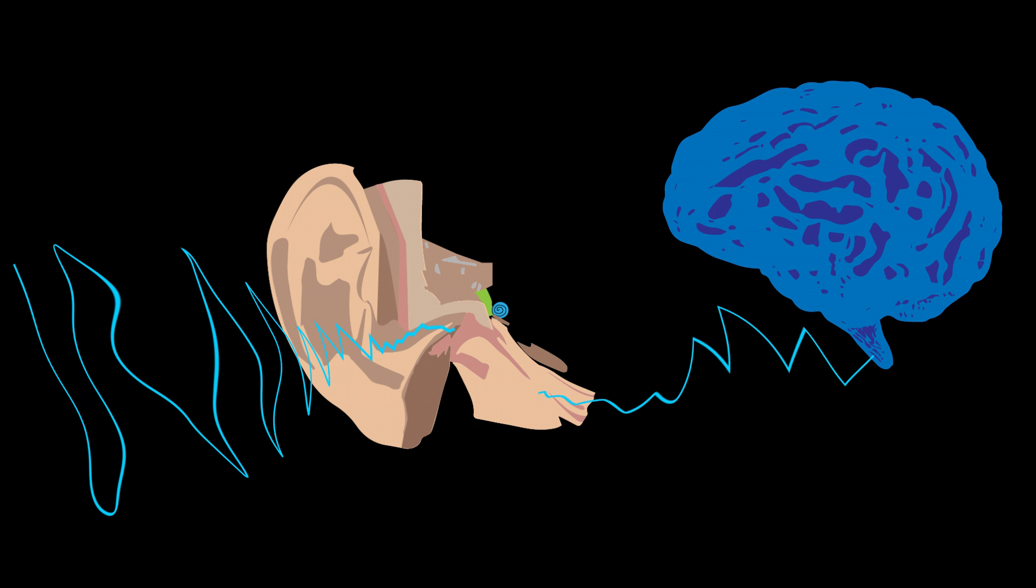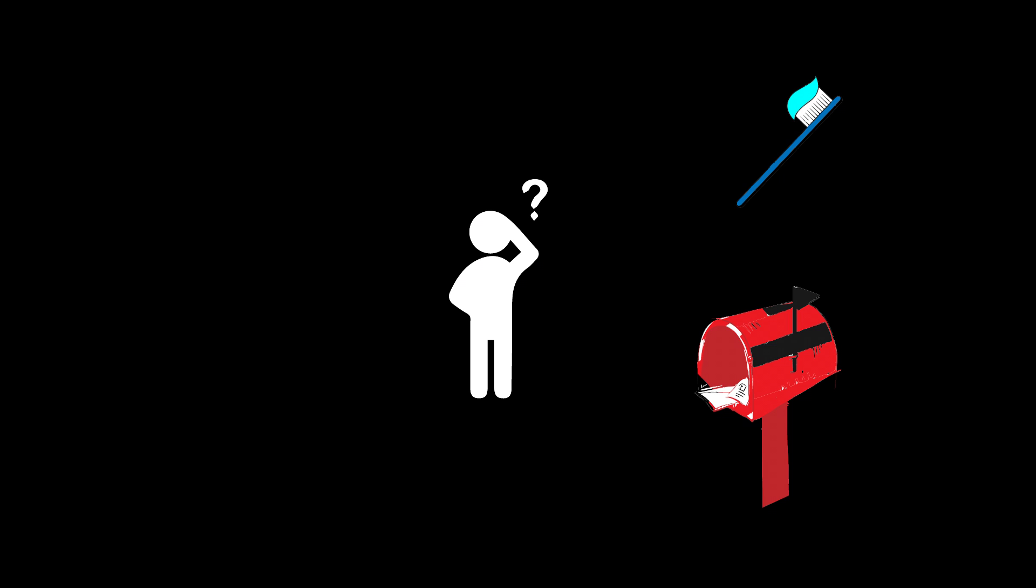Each note has its own frequency. For example, E has a frequency of approximately 82 hertz, but A is 110 hertz. Frequency is something repeated regularly, such as receiving your daily mail or brushing your teeth. In terms of sound, it is the regular reoccurrence of vibrations.